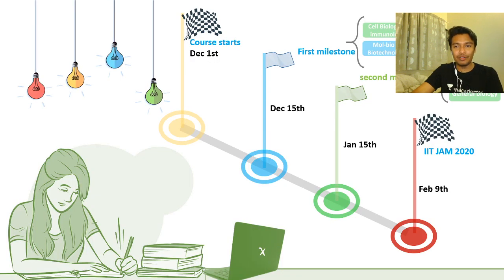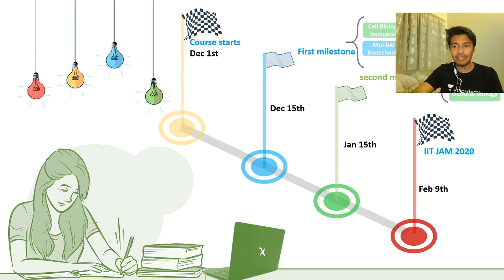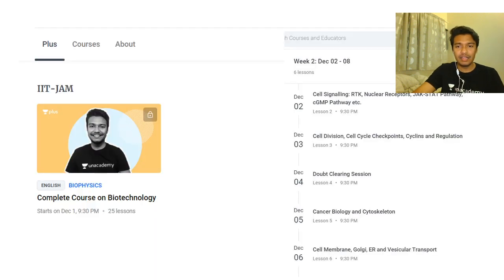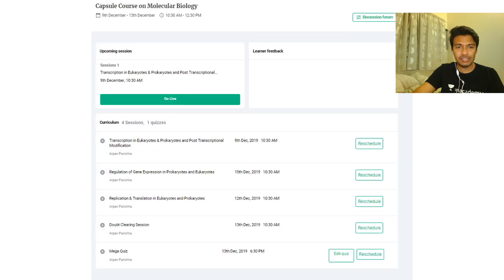On the Unacademy Plus platform we are simultaneously revising these courses. We are done with cell biology, immunology, molecular biology, and biotechnology — that was our first milestone, achieved by January 15th. The second milestone is biochemistry and physiology, then microbiology and general biology. So if you guys are interested, you can join there. Things are way more structured and chilled out in that platform, but the YouTube classes are also equally good. You can also take part in the mega quiz relevant to your exam.